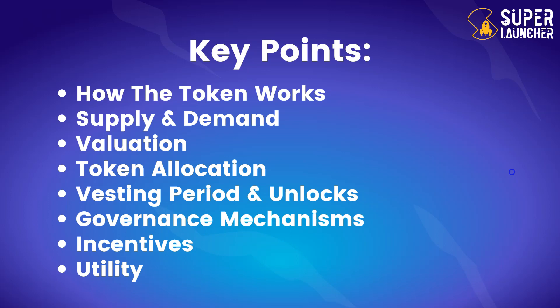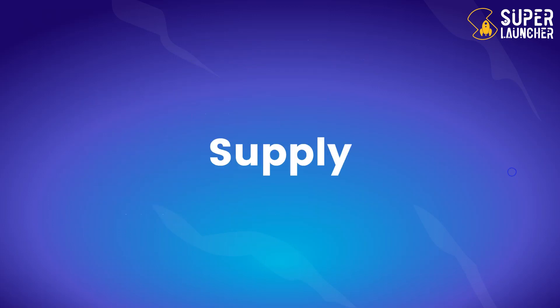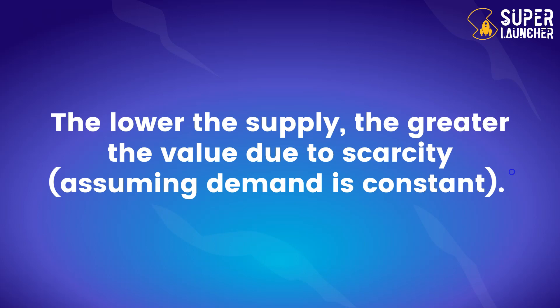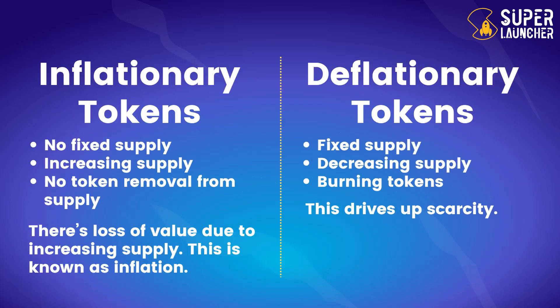We are going to focus on supply, valuation, token allocation, investing period, and unlocks. Starting with supply: when someone creates a token, one of the most important aspects is the supply — the number of tokens that can be minted, referred to as the maximum supply. A basic rule is that the lower the supply, the greater the value due to scarcity, assuming demand is constant. There are two types: inflationary tokens, where there's no fixed supply or increasing supply with no token removal, causing loss of value — known as inflation.